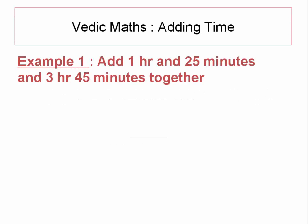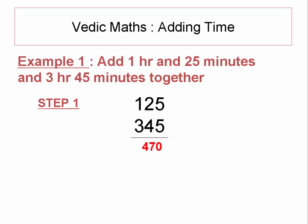Now let us take an example. Suppose you want to add 1 hour and 25 minutes and 3 hours and 45 minutes together. The simple way according to Vedic mathematics is to just write 1 hour 25 minutes as 125, and 3 hours 45 minutes as 345. Now you just add these two numbers, so the output becomes 470.